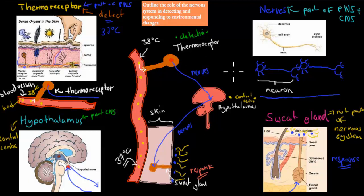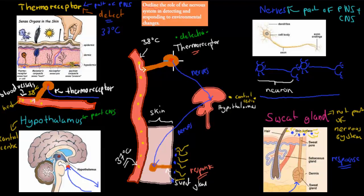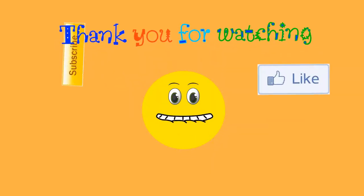So the dot point asks us to outline the role of the nervous system in detecting and responding to environmental change. The thermoreceptors are part of the nervous system, so we can't detect change without them. And even though the sweat glands are not part of the nervous system, without the nervous system we couldn't get the message to the brain or from the brain to the sweat glands — so response wouldn't happen either. Both response and detection are completely reliant on the nervous system, and without it we wouldn't have homeostasis. Thank you for watching.